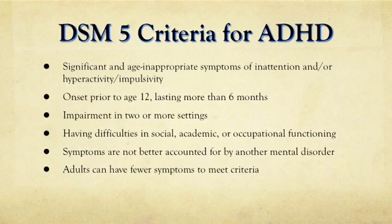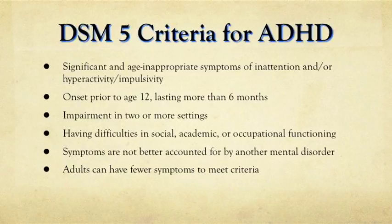The first topic is the new DSM criteria for ADHD. It includes significant and age-inappropriate symptoms of inattention and/or hyperactivity or impulsivity. The onset needs to have occurred by about age 12, and the symptoms must have lasted for at least six months or more. There also needs to be impairment in functioning in two or more settings.